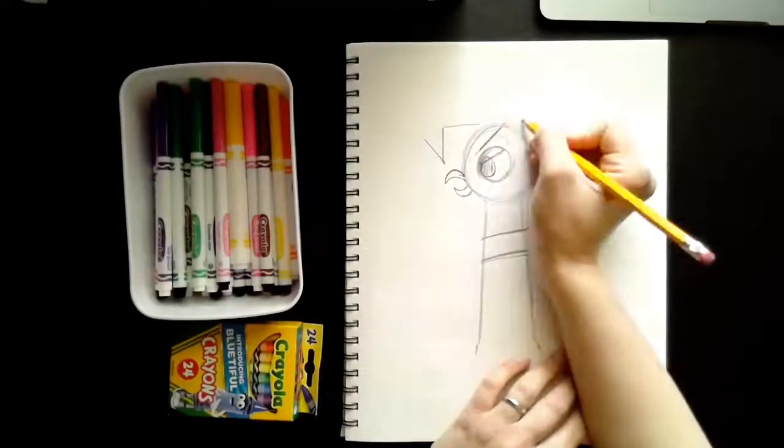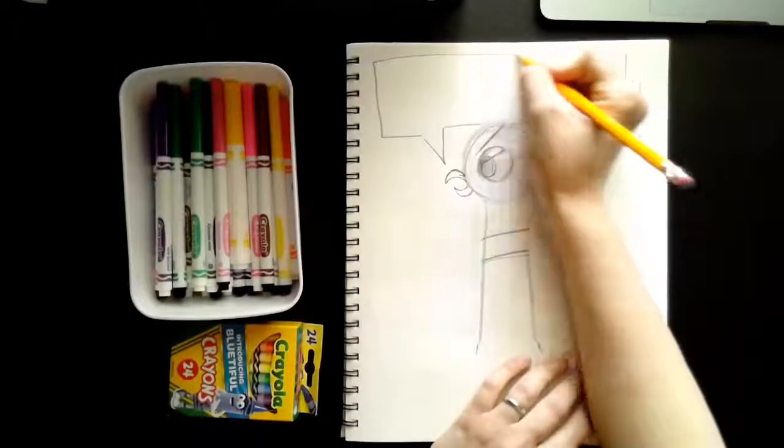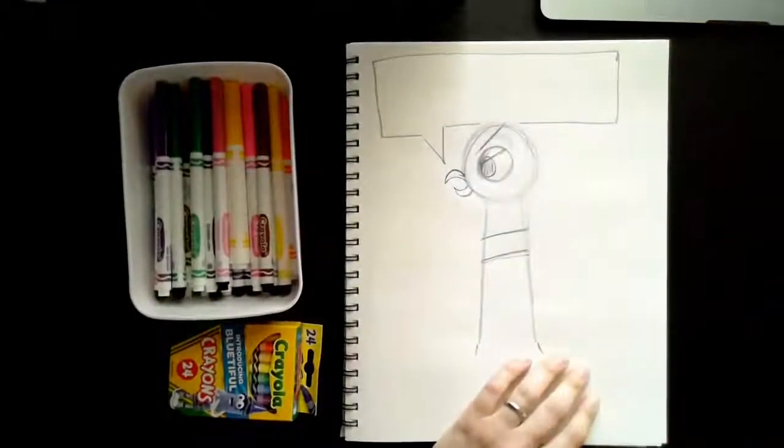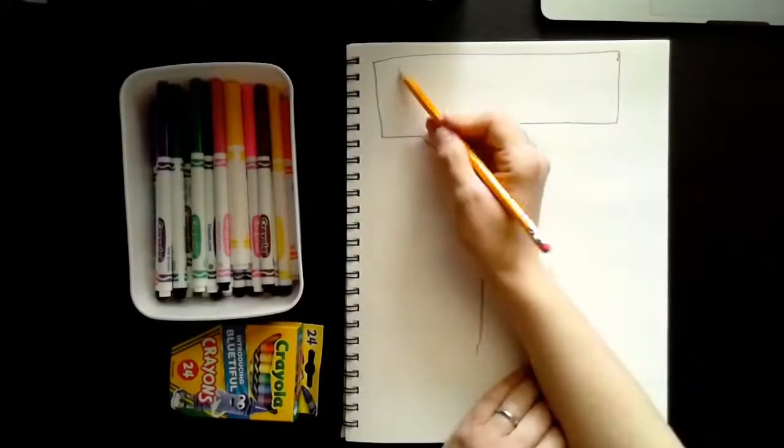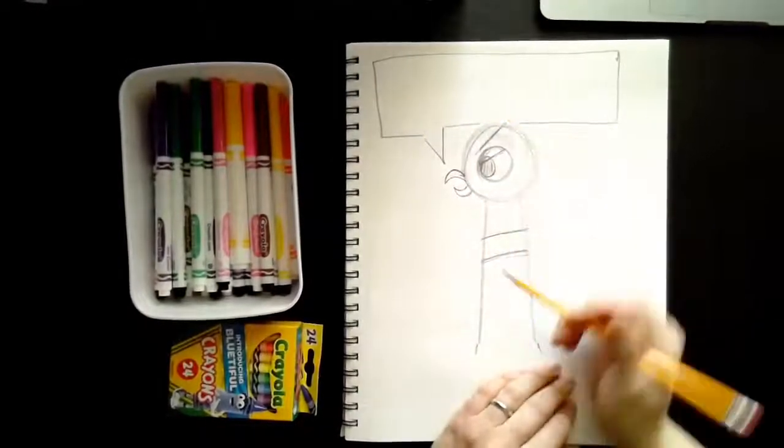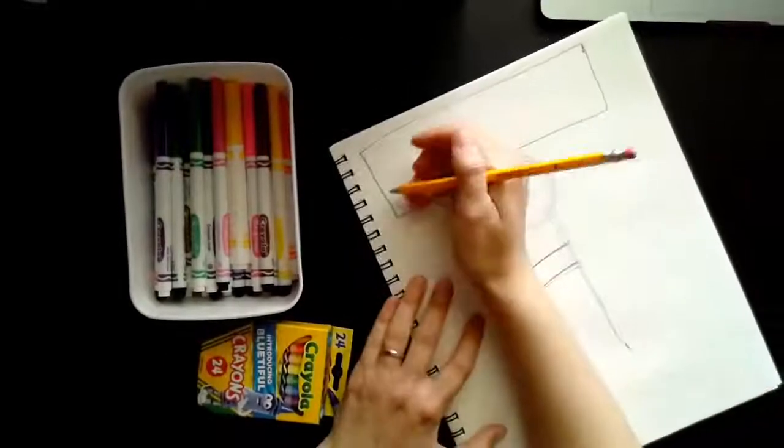And you can make your speech bubble any shape you'd like. It can be a rectangle. It can be a big oval. It's up to you. And this is the part where you can ask mom or dad to help you with your writing. So I can go ahead and write my saying for pigeon.